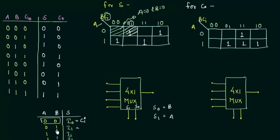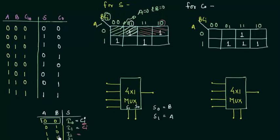For the second case when A=0 and B=1: A=0 covers the entire top row, and B=1 covers the last two columns. In this shaded region there is a 1, and the value of Cin for that cell is 0. So I1 = Cin complement.